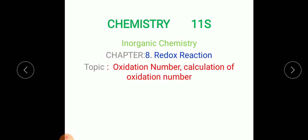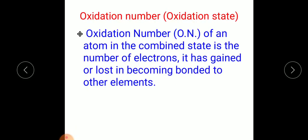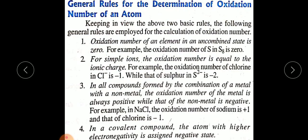Today we are going to see a very important topic: oxidation number and calculation of oxidation number. The oxidation number or oxidation state of an atom in the combined state is the number of electrons it has gained or lost in becoming bonded to another element.